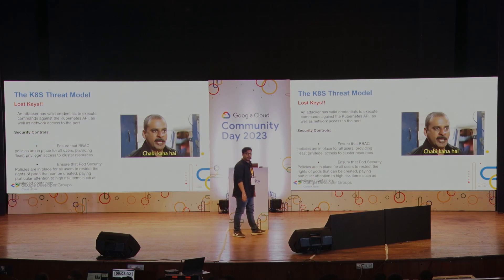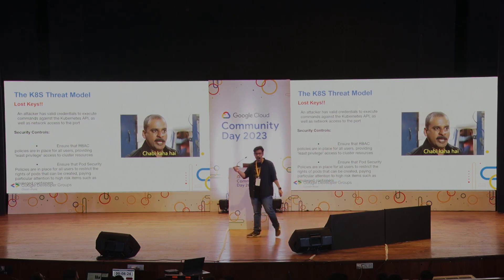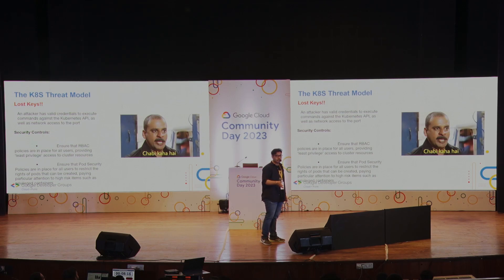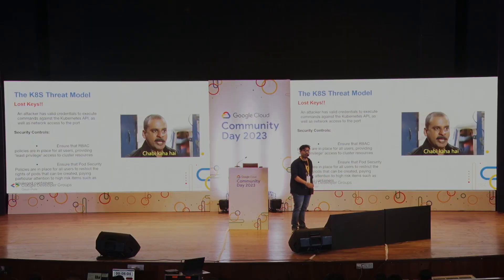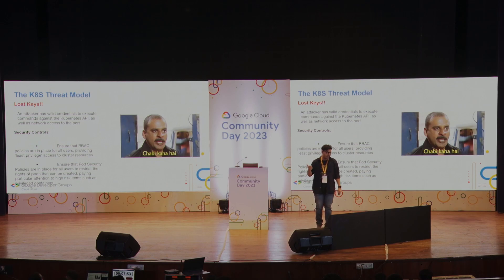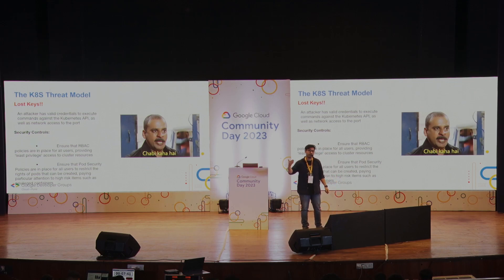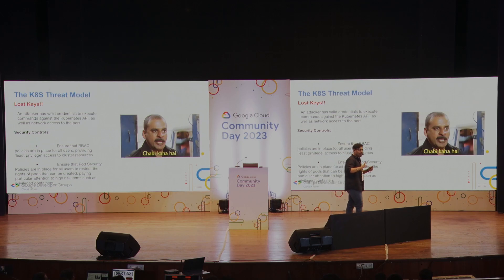The Kubernetes threat model also covers lost keys. Keys like API keys can be keys to another service or for authentication to another service. When lost, they create a lot of hassle. Ensure that RBAC policies are in place for all users, providing least privilege access so that unauthorized users cannot access those keys. Ensure that pod security policies are in place to restrict privileges for people that might be able to access keys they are not supposed to.